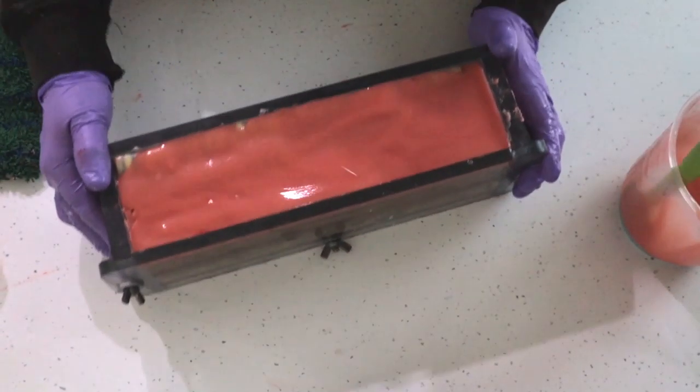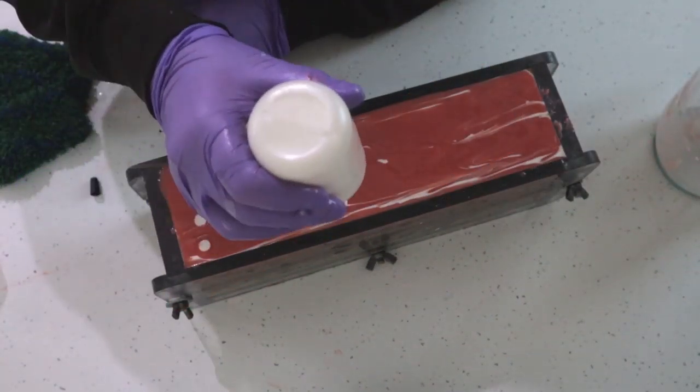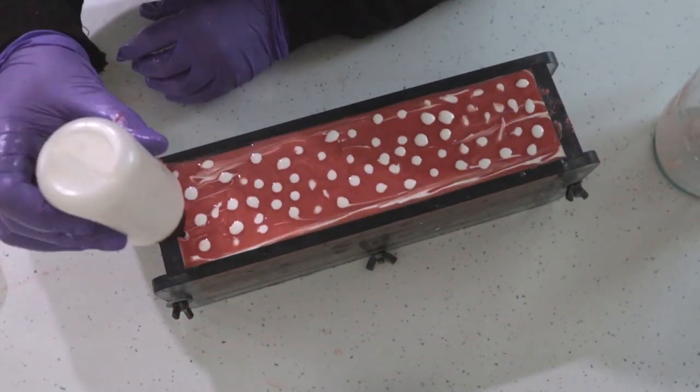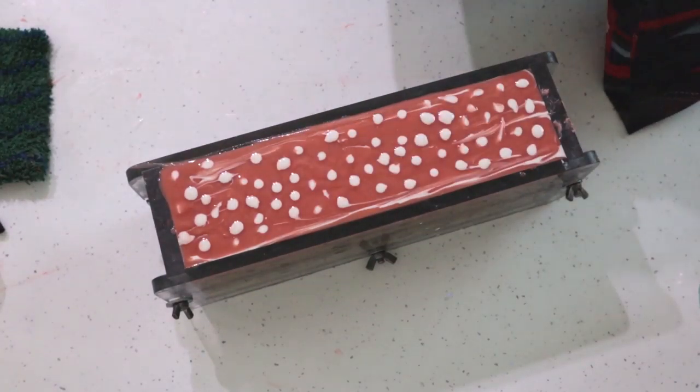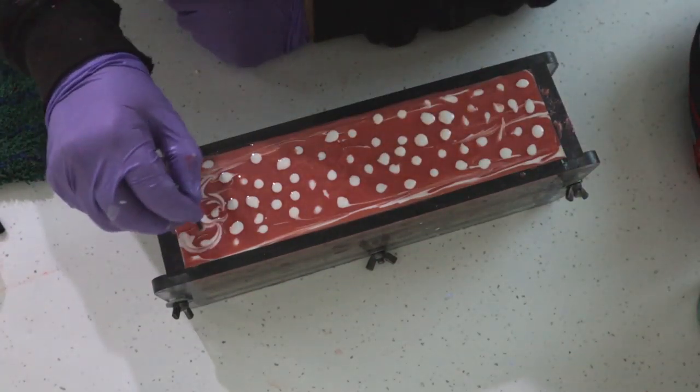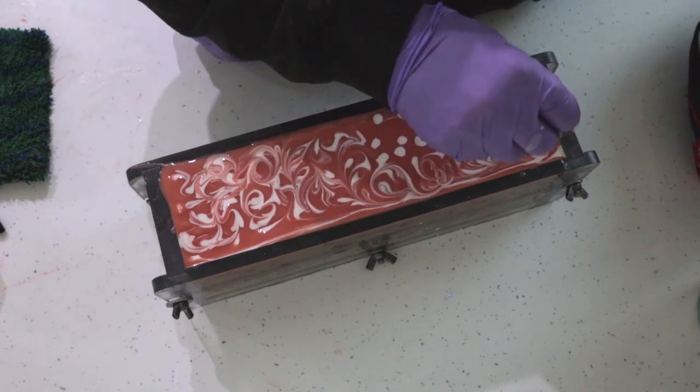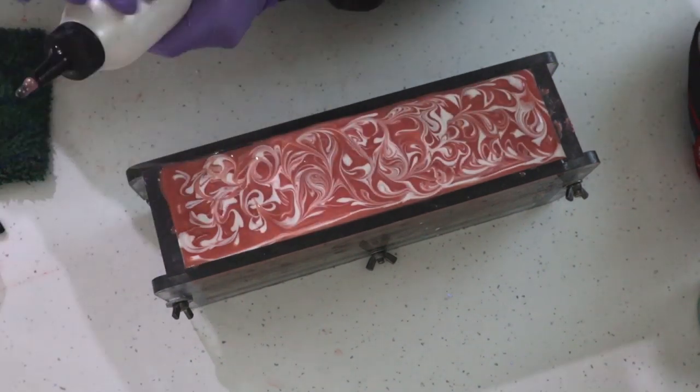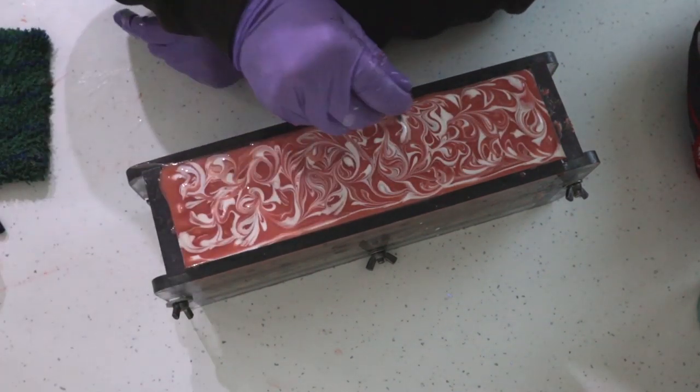And then just finishing off the top with a simple swirl pattern and as normal I'll cover this and wrap it with some cling wrap and I will CPOP it in the oven, turn the oven off as soon as it goes in and leave it to gel overnight.